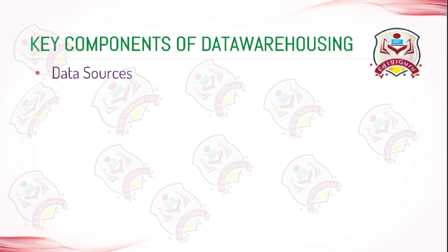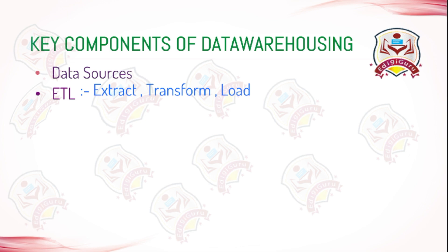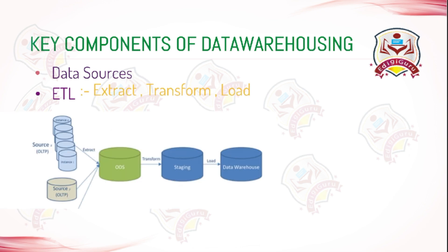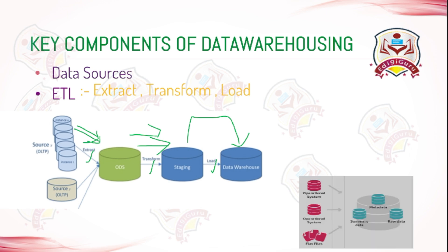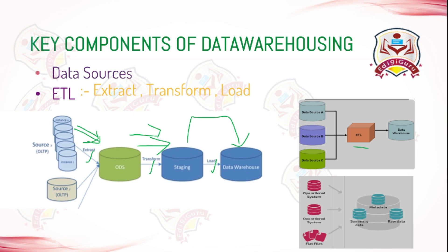The next component of data warehousing is ETL, which stands for Extract, Transform, and Load. This is the process which extracts the data from data sources, transforms it to fit the target data warehousing schema, and finally loads it into the target data warehouse. ETL tools automate this process in order to ensure data quality and consistency.